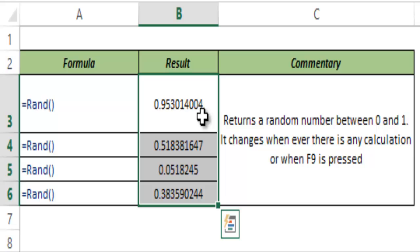One of the properties of this function is that when generating random numbers between 0 and 1 for many cells, these numbers are distributed normally. You can see we have 0.95, 0.51, 0.05, and 0.38. There's a whole lot of range covered between 0 and 1.